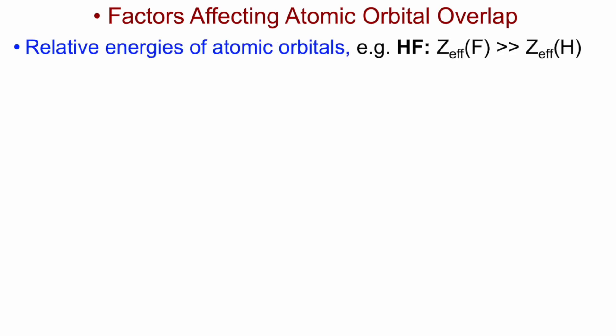Another factor affecting atomic orbital overlap is the relative energies of the constituent atomic orbitals. Until now we've considered examples where the initial energy of the two atomic orbitals is the same. Now let's consider heteronuclear examples where the two atoms are different — and here an extreme case: hydrogen fluoride, where Z-effective of fluorine is far greater than Z-effective of hydrogen. For hydrogen, we consider the 1s orbital containing one electron; from the Bohr model, we can calculate the energy of this orbital to be minus 13.6 eV.